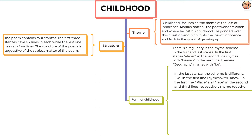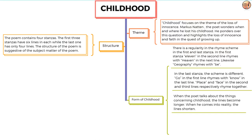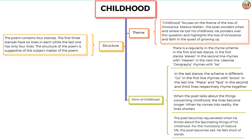The poem follows a subjective perspective of telling things. It is a lyric. When the poet talks about the things concerning childhood, the lines become longer. When he comes into reality, the lines shorten. The poet becomes rejuvenated when he thinks about the fascinating things of his childhood, but for the monotony of mature life, the poet becomes sad and falls short of words.